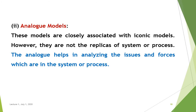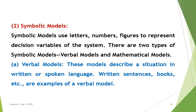Next are analogous models. These models are closely associated with iconic models; however, they are not replicas of the system or process. The analog helps in analyzing the issues and forces which are in the system or process. Next come symbolic models. Symbolic models use letters, numbers, and figures to represent decision variables of the system. There are two types of symbolic models: verbal models and mathematical models.